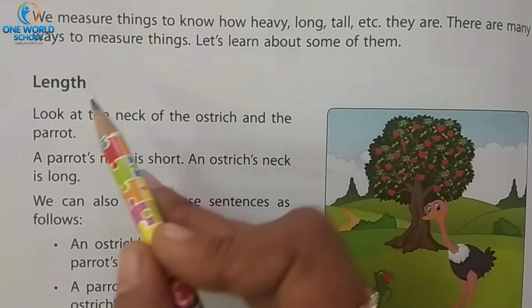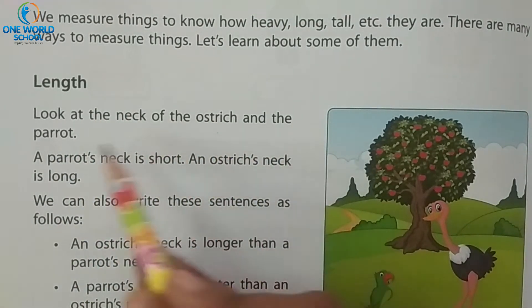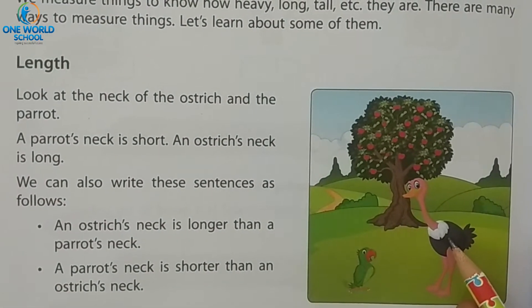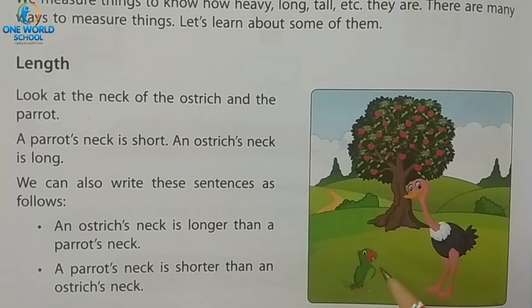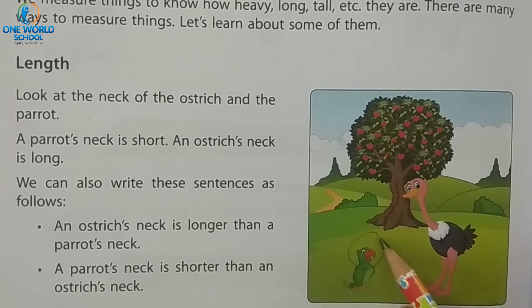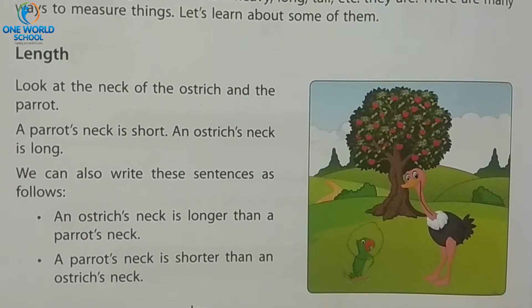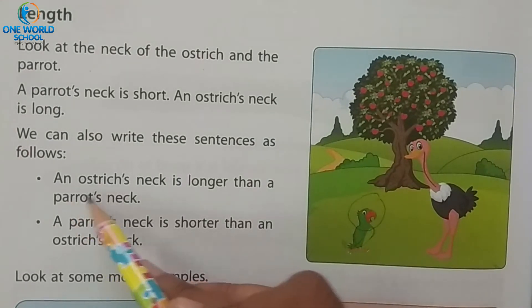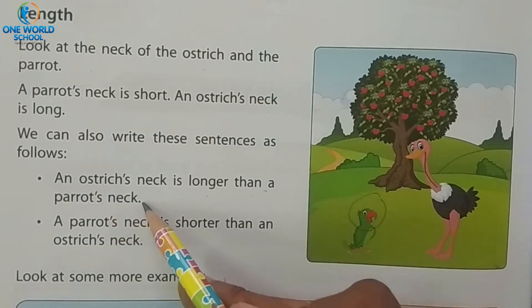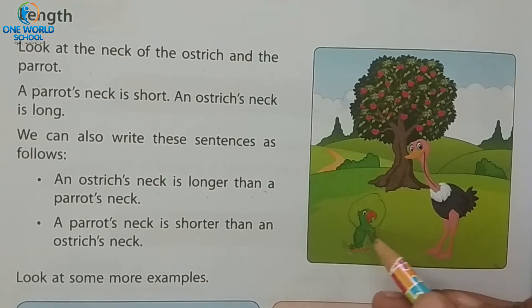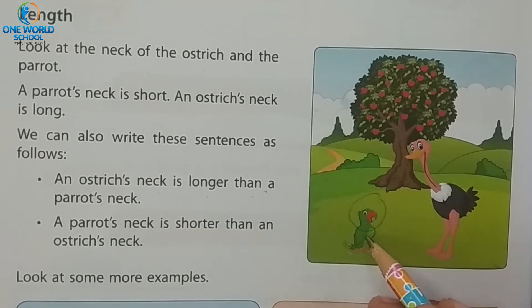First of all, length. Look at the neck of the ostrich and the parrot. In this picture, ostrich is there and parrot is there. Parrot's neck is short and ostrich's neck is long. So, an ostrich's neck is longer than a parrot's neck, and a parrot's neck is shorter than an ostrich's.